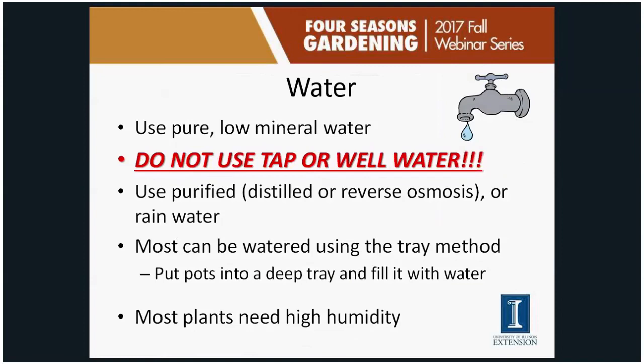Water is one of the biggest mistakes people make with carnivorous plants. Because they come from nutrient-poor areas with low mineral content in the water, you need to use pure, low-mineral water with dissolved solids less than 50 parts per million. That means no tap water or well water, as their minerals and salts can damage roots and build up in the soil over time. Use distilled water, reverse osmosis water, or collected rainwater. The tray method — placing pots in a shallow tray of water — works well for most plants and also helps with humidity indoors.